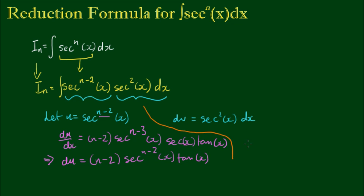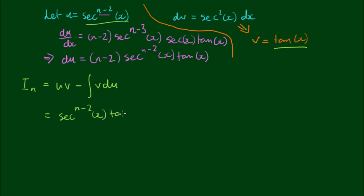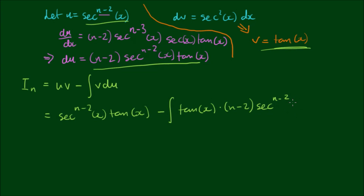For the dv term, integrating sec squared x with respect to x gives v equal to tan x, since tan x differentiates to sec squared x and inversely sec squared x integrates to tan x. Applying the integration by parts formula, iₙ equals u times v minus the integral of v du: that is, sec to the power of n minus 2 of x times tan x, minus the integral of tan x times n minus 2 times sec to the power of n minus 2 of x times tan x dx.